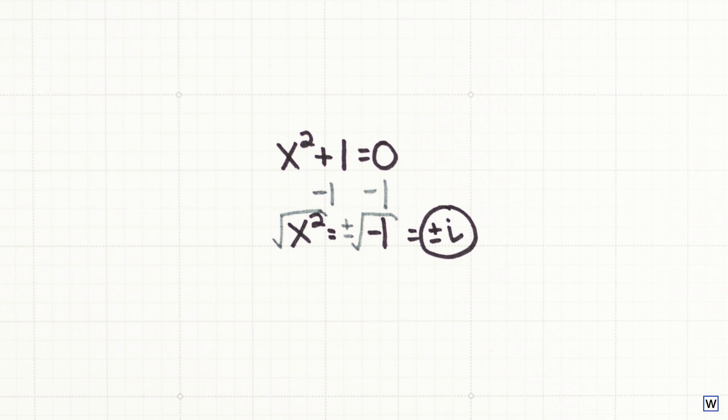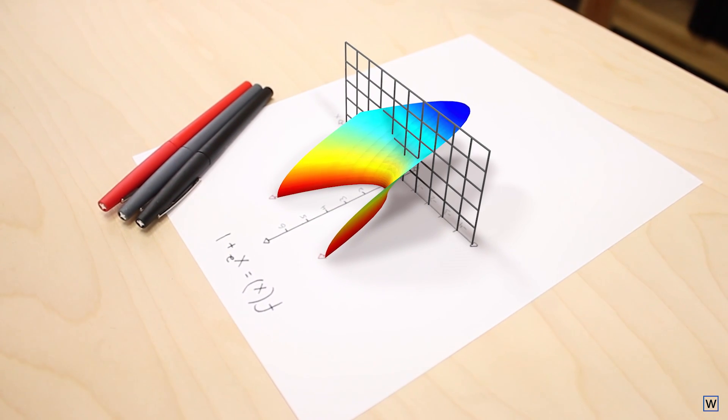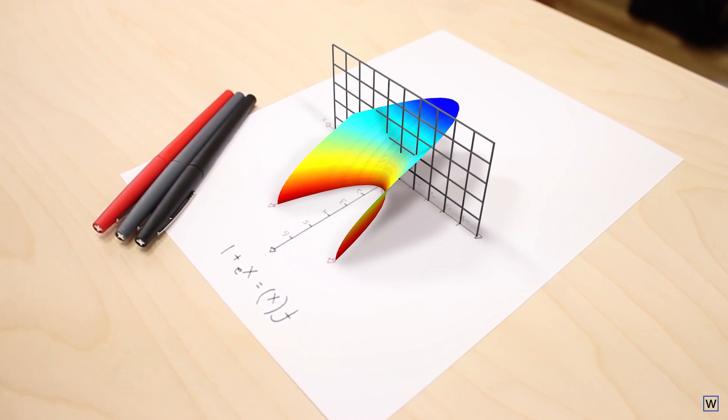So that's cool, but to really make sense of our shape from part 1, we need to dig a little deeper and talk about functions of complex variables.